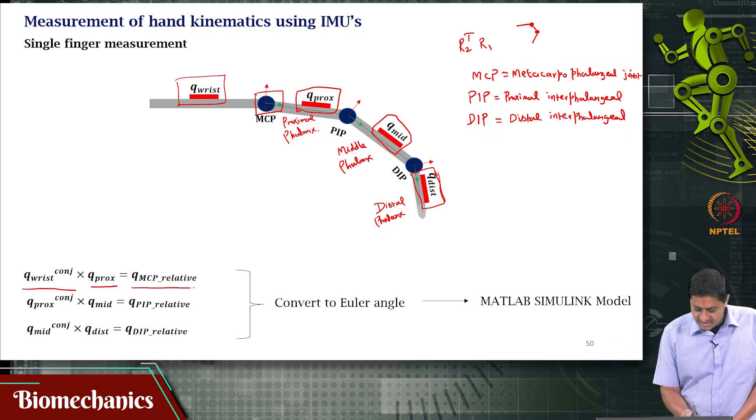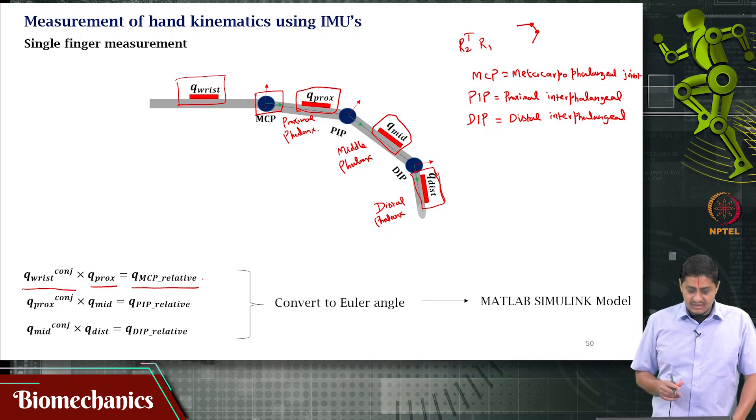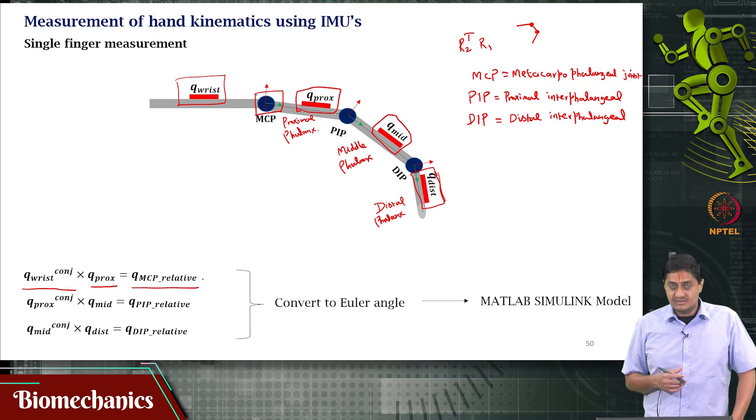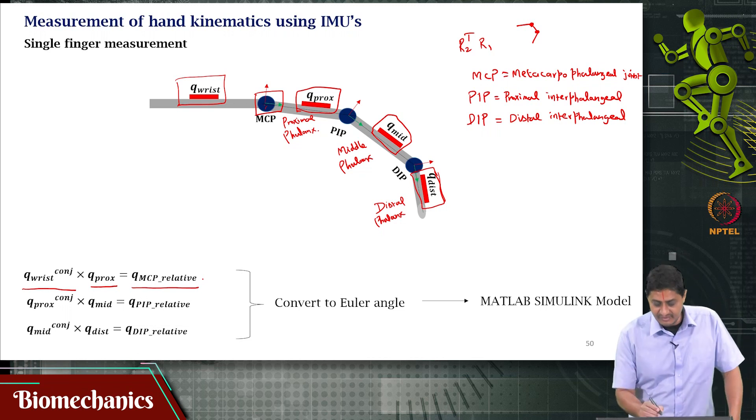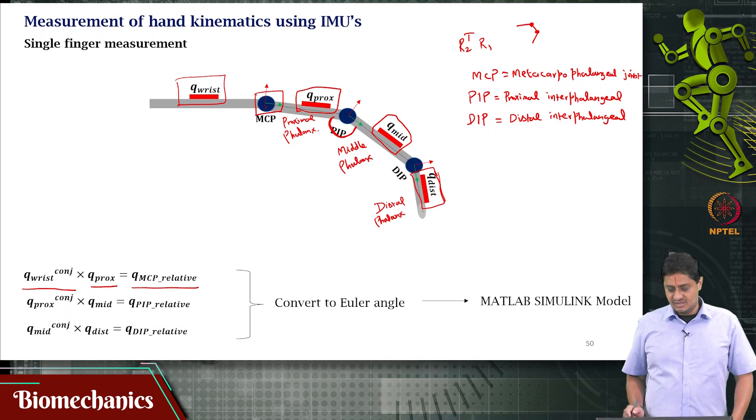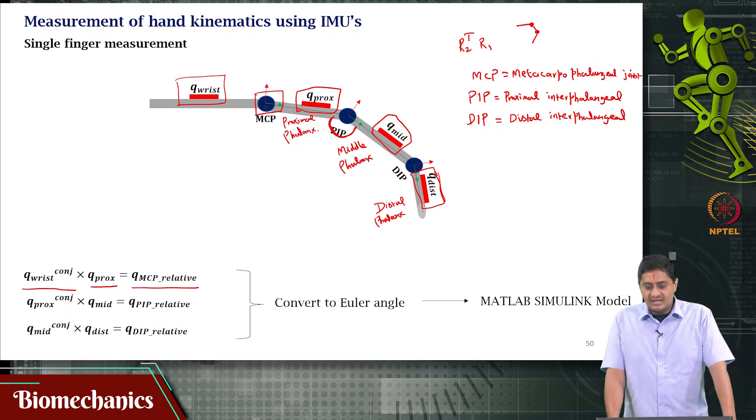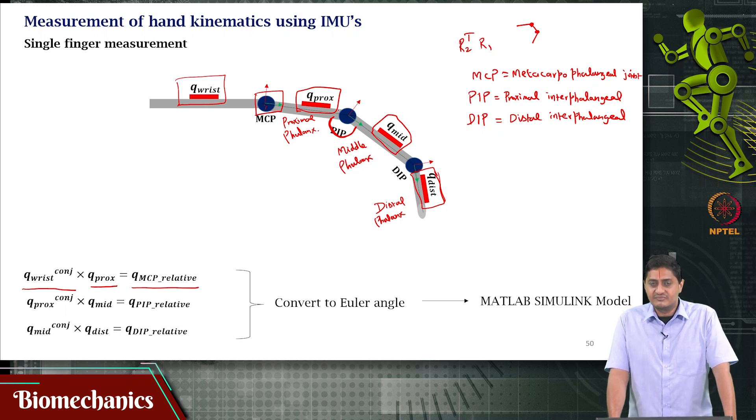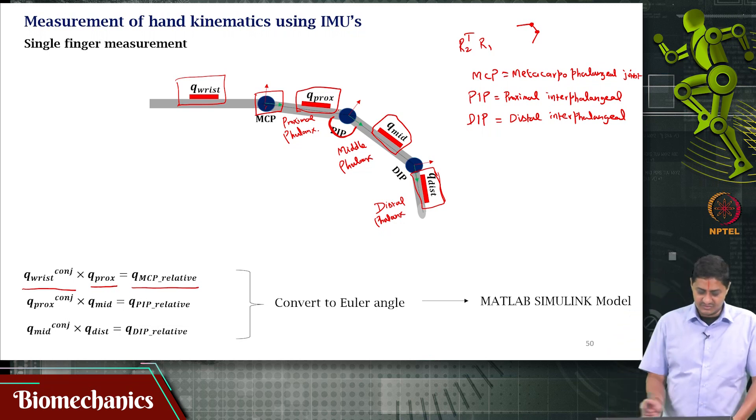We use these relative orientations. For example, if I want to find the relative orientation between the proximal phalanx and the wrist joint, I multiply the conjugate of the wrist joint by the quaternion of the proximal phalanx. But if I want to find the angle at the PIP joint, then I have to multiply the complex conjugate of the proximal phalanx quaternion with the quaternion from the middle phalanx. That will give me a relative quaternion, and this will also give me a relative quaternion.